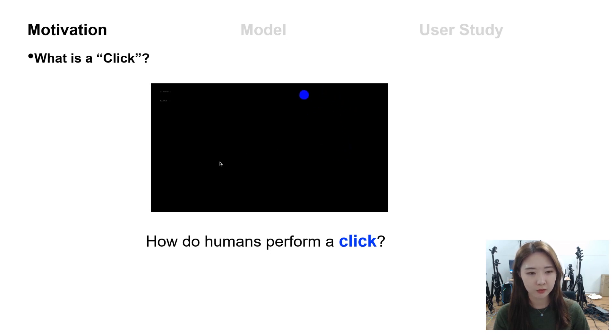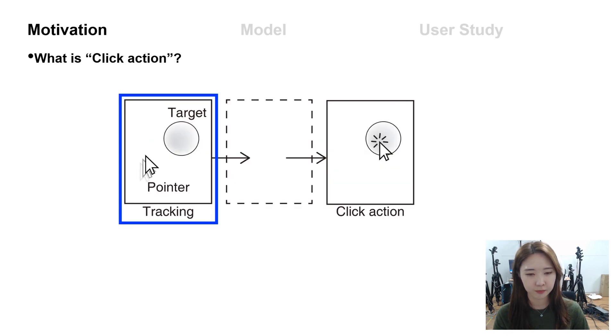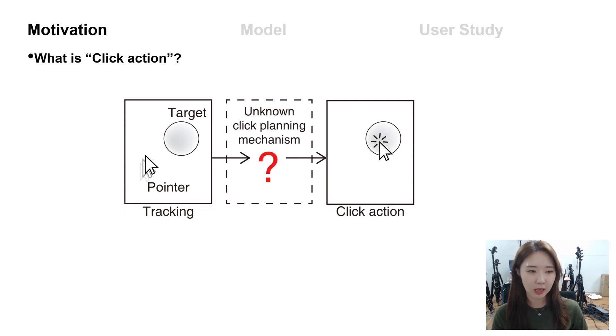Click is a very common action we carry out every day while we are using a computer. However, unlike the pointing task, the mechanics of performing a click are still under-explored areas. There have been a number of research that tried to explain tracking movements in pointing tasks, but very few existing models could answer the question: how exactly do humans click a target?